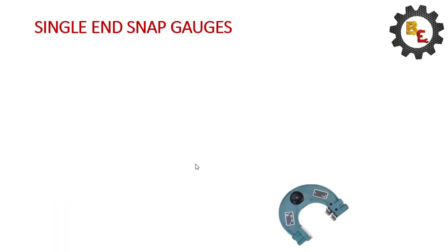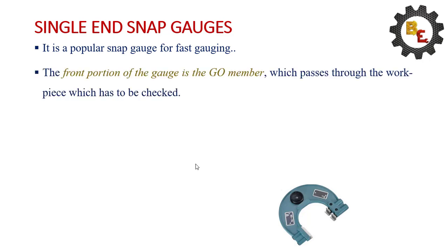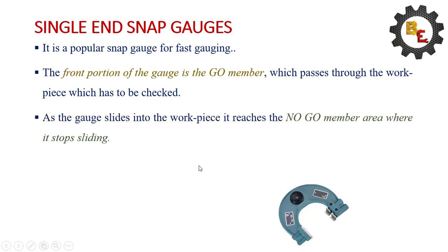Single end snap gauges. It's a popular snap gauge for fast gauging. The front portion of the gauge is the go member. See here, this one is the go member which passes through the workpiece which has to be checked as the gauging side into the workpiece that reaches the no-go member area where it stops sliding. The workpiece will pass between these two surfaces. This one is called no-go limit. The object will not cross over this no-go limit.